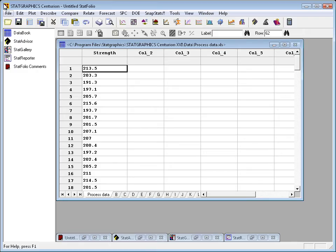As an example, I've loaded into the StatGraphics data sheet a sample of 100 observations having to do with the breaking strength of widgets. I'm curious to know whether the data in this column, the 100 observations, could reasonably have come from a normal distribution.